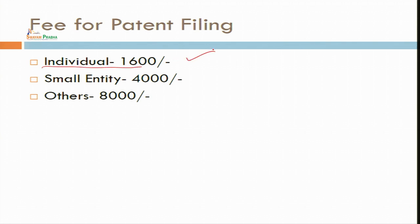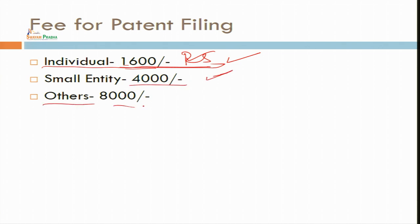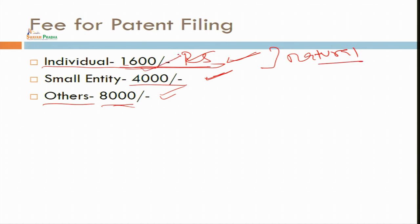For example, one individual scientist going to file a patent individually in his name can file for rupees 1600. Individual fees is different, or if some small entity is there, fee is different — 4000 rupees. Or for a company, an MNC, or a foreign enterprise, the fee is different. Different fees are there for different persons or companies. LLP and all other entities will come under the other category. You can file a patent in whichever category you fall under.